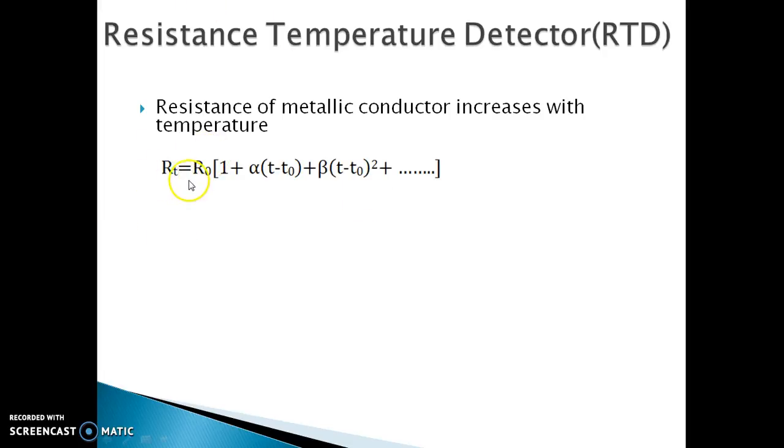It states that RT equals to R0, 1 plus alpha, T minus T0 plus beta into T minus T0 whole square plus such further terms. Where RT is the resistance at T degree Celsius, R0 is the resistance at 0 degree Celsius.